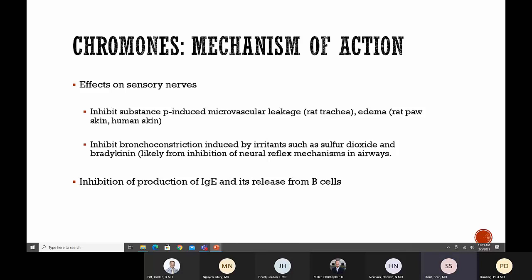The second mechanism involves effects on sensory nerves. Cromolyn inhibits substance P-induced microvascular leakage in rat trachea and decreases edema in rat and human skin. It inhibits bronchoconstriction induced by irritants like sulfur dioxide and bradykinin, likely from inhibition of neural reflex mechanisms. The third proposed mechanism, which I'd never heard of before, is that it inhibits production of IgE and its release from B-cells. Exactly how it does this is not fully understood.